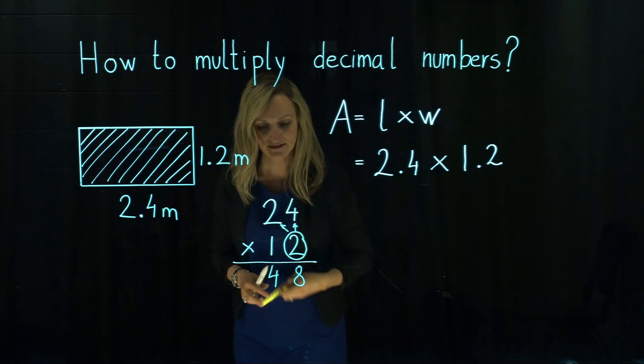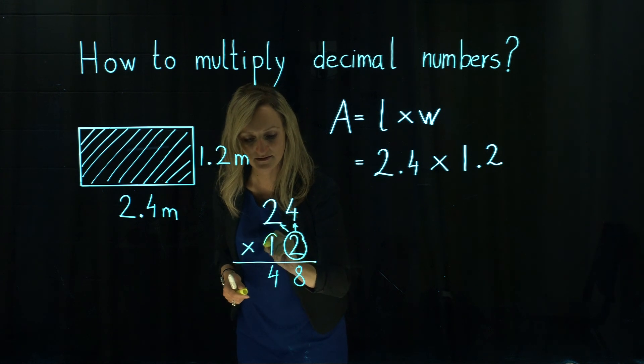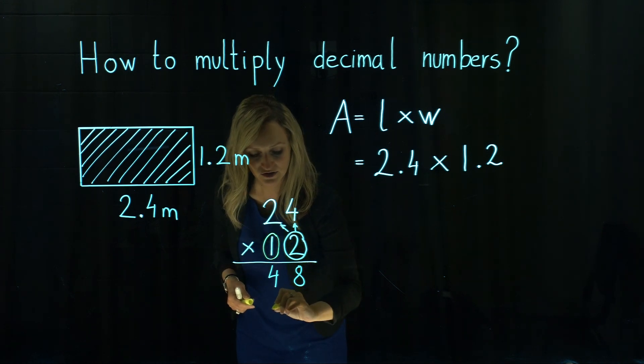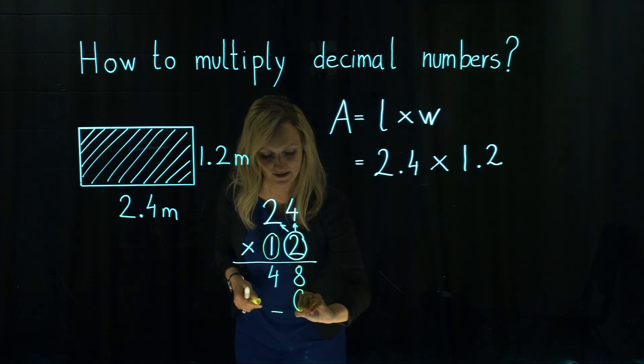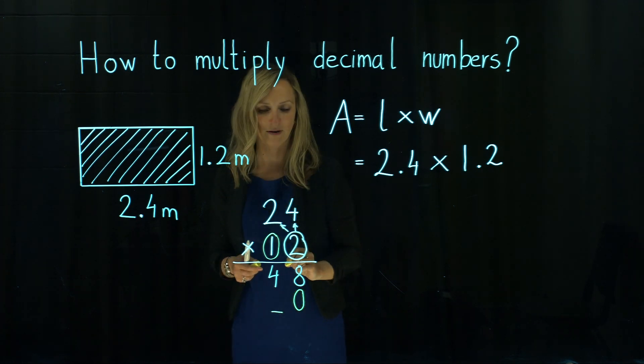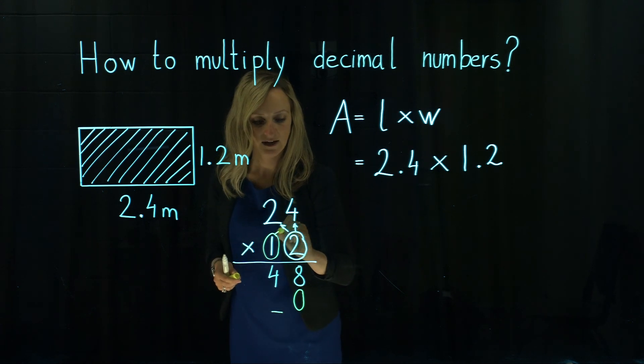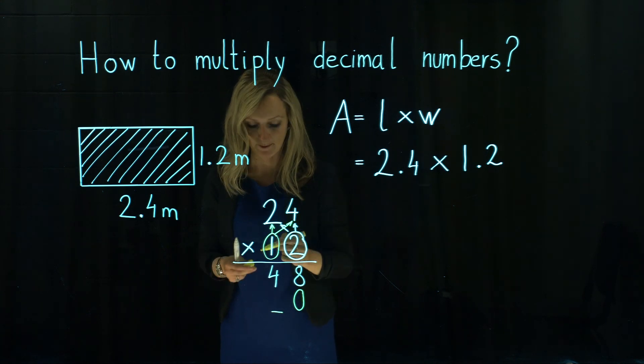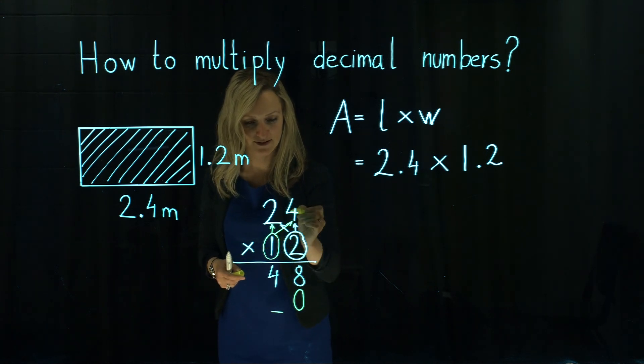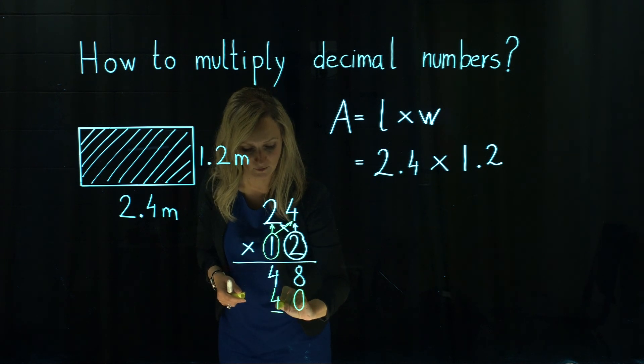Then we continue with the place value of tens. That's why we're going to continue writing our numbers at the place value of tens and under the ones we will just write a 0 for a placeholder. Then we multiply our number 1 by each digit in the top number and that is 1 times 4 is 4.